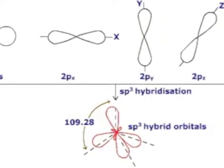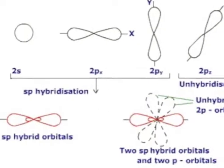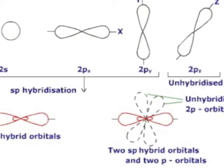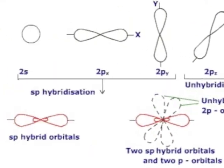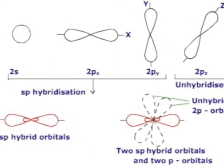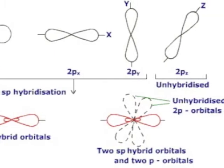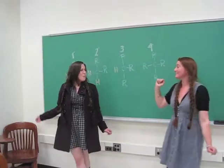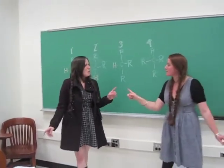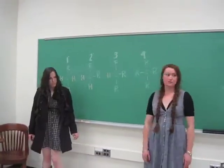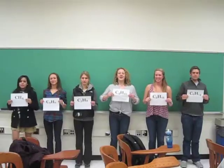Alkanes assume an sp3. Alkenes assume an sp2. Alkynes are sp — which brings us back to... one carbon family count us.